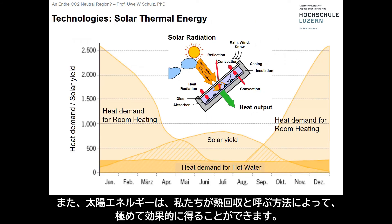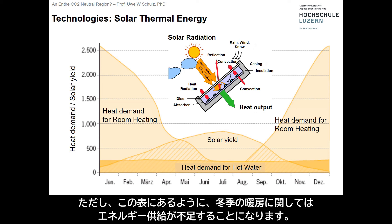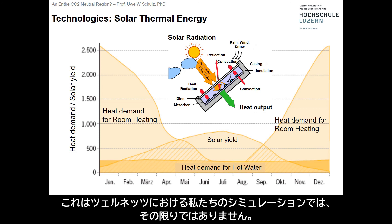Solar energy can also be very effectively captured for what we call thermal collection. Thermal collectors require per kilowatt hour only about a third of the space compared to PV. However, for heating in the winter, as can be seen on this chart, typically the amount of energy provided is not sufficient. So what is sometimes used with thermal energy collectors is that the requirement for hot water is satisfied, which, in the case of this simulation, is not part of our model.